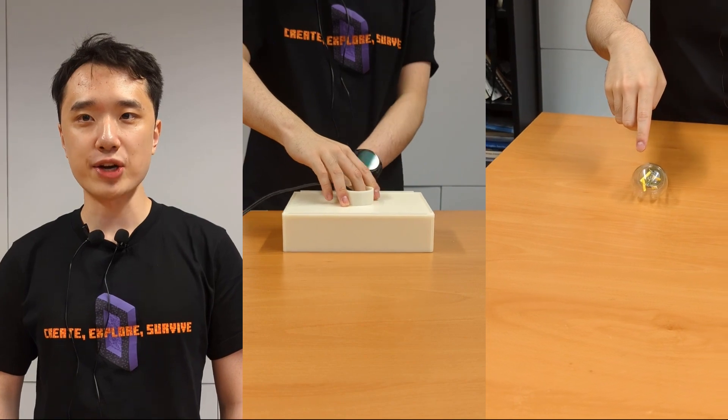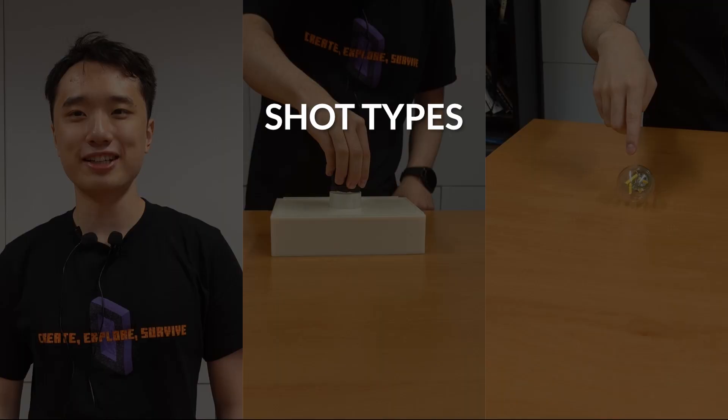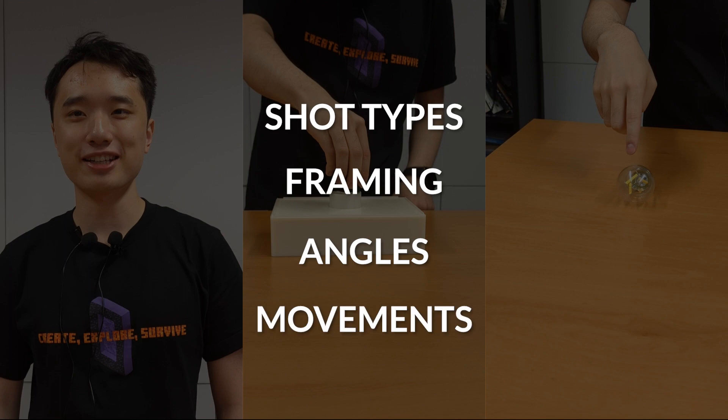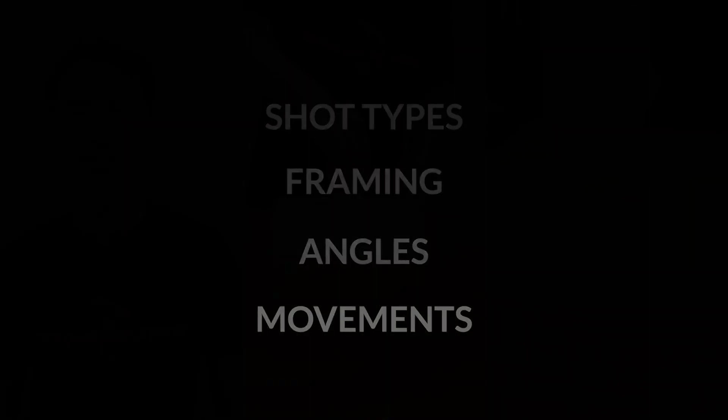Instructors can use subtle cues including gestures and speech to control shot types, camera framing, angles, and movements. This allows instructors to fluidly blend camera control commands into instructional activities.